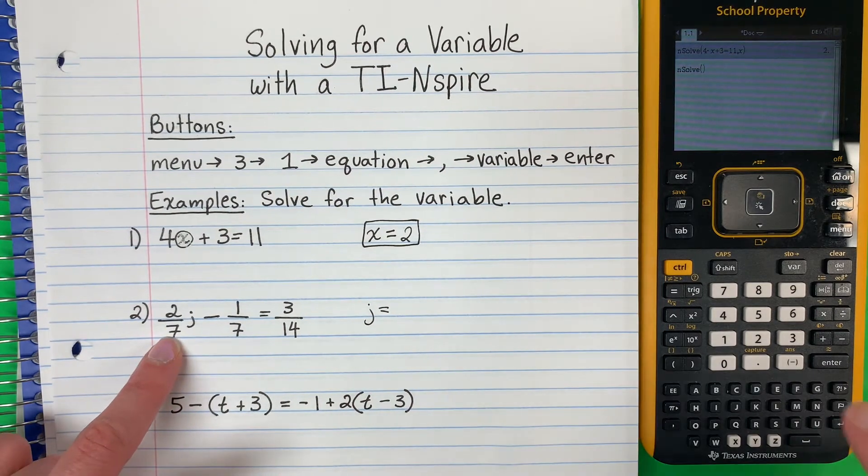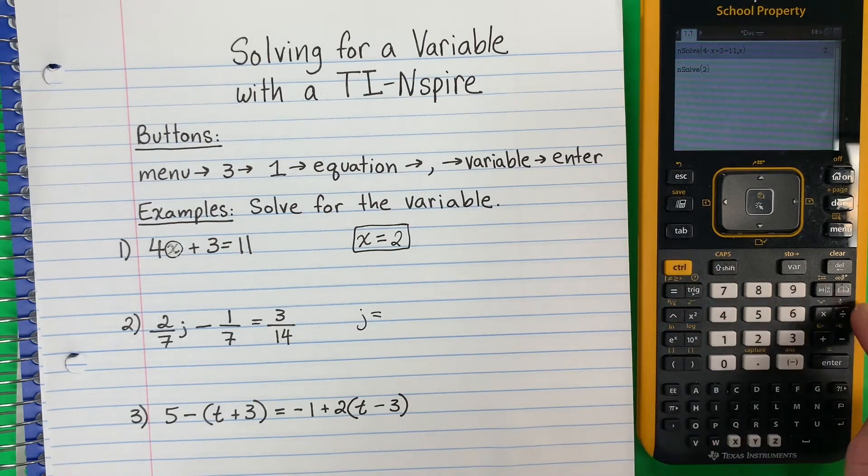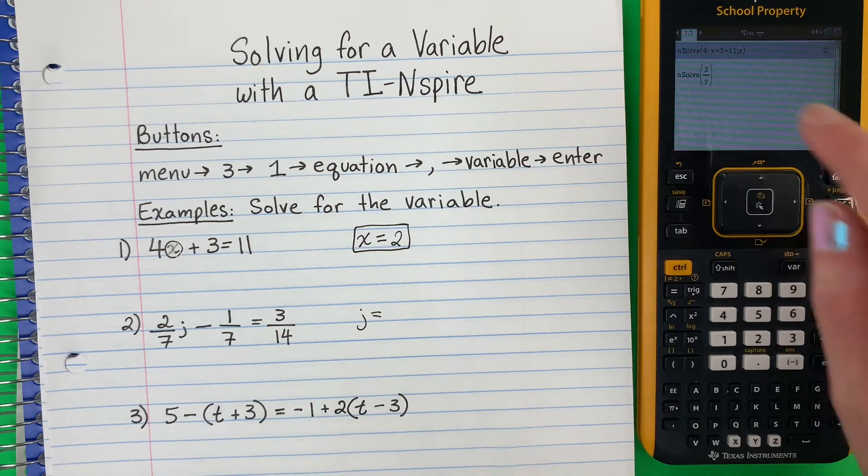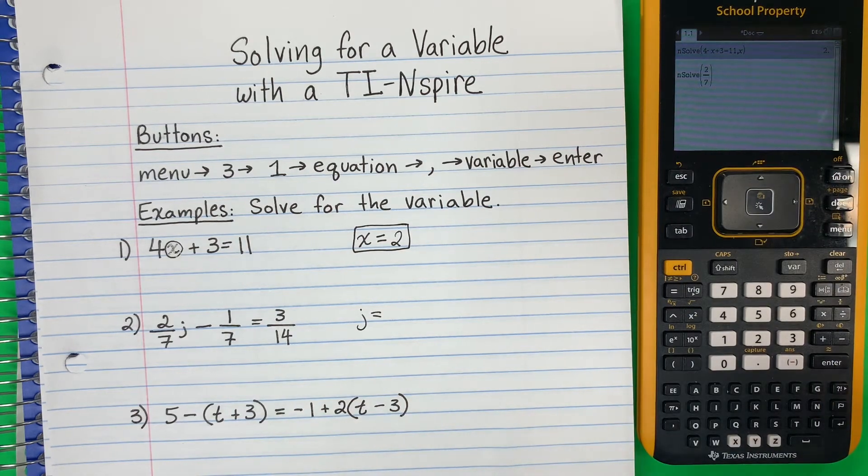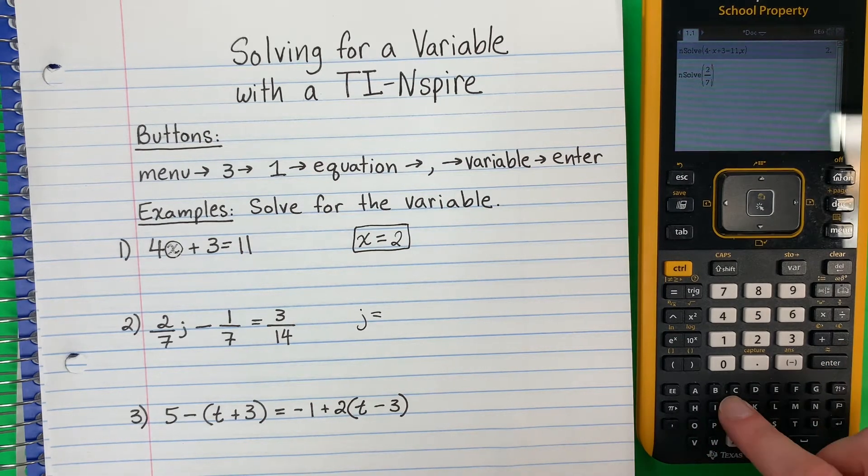So that's 2/7. So look, 2. To make the fraction, para hacer la fracción, I'm going to do control, divide, 7. I need to exit out of the fraction. Necesito salir del fracción. So I'm going to go to the right, a la derecha, and put the letter. Y voy a poner mi letra. J.